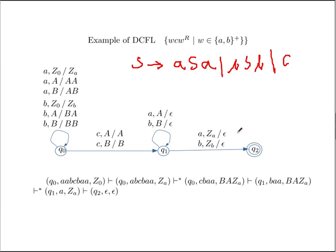To summarize: to show a language is a DCFL, construct a DPDA for it. To show something is a CFL but not a DCFL, construct a CFG or PDA to show it is a CFL, then take its complement and use the pumping lemma for CFLs to show the complement is not a CFL.